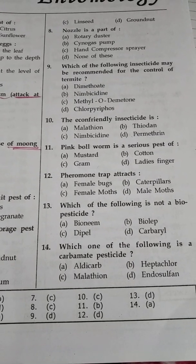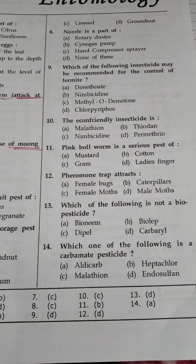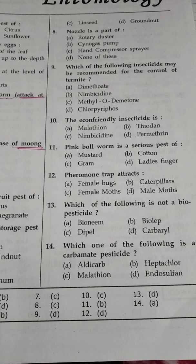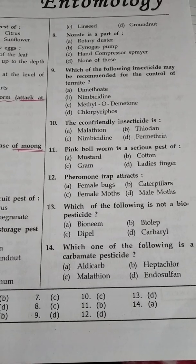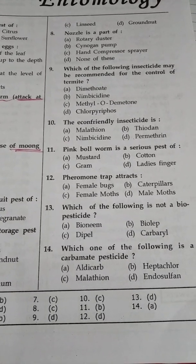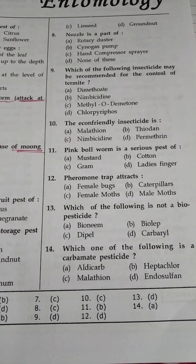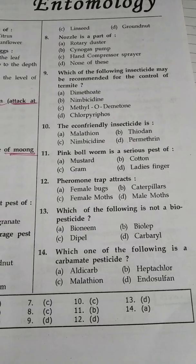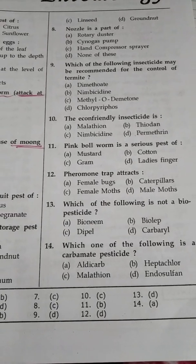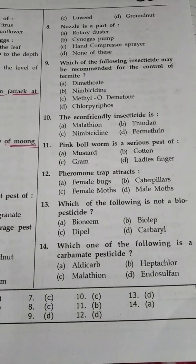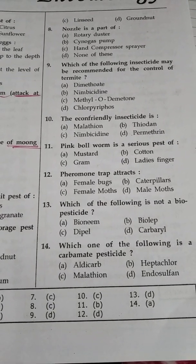Question number 10: The eco-friendly insecticide is — option A malathion, option B thiodane, option C nimbicidine, option D permethrin. The answer is nimbicidine because it is made from neem, that's why it is eco-friendly.